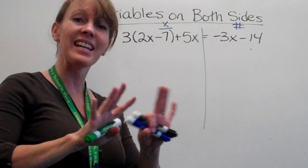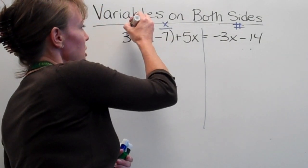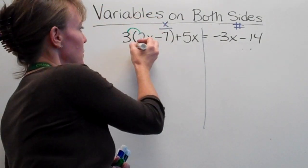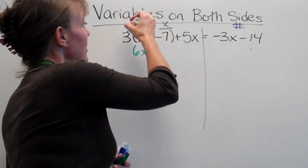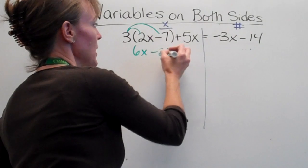So first I'm going to look to see, is there any distribution I need to do? And yes, there is. So I'm going to distribute and multiply 3 times 2x, which is 6x. And 3 times negative 7, remember the Vegas rule, to get negative 21.